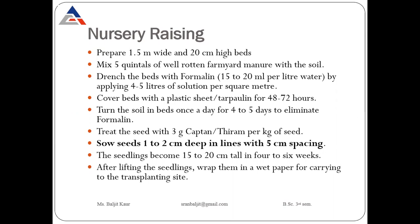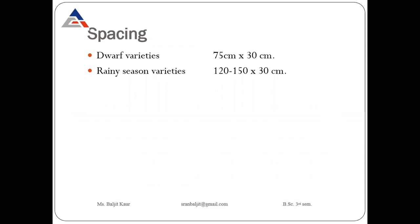To summarize nursery raising: firstly prepare well-tilled nursery beds, mix farmyard manure, apply formalin, then turn the soil once a day for four to five days to eliminate formalin effect. Treat seeds with Captan or Thiram and sow in nurseries. After four to six weeks, when seedlings reach 15 to 20 cm height, transplant them into the main field.